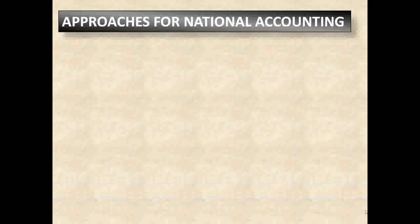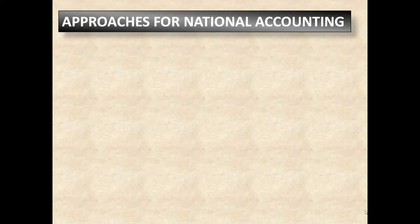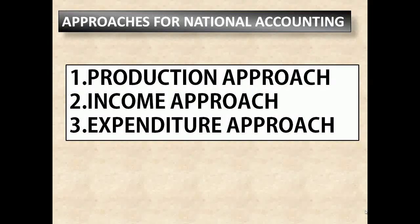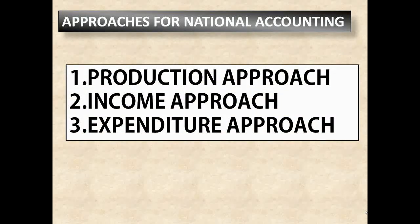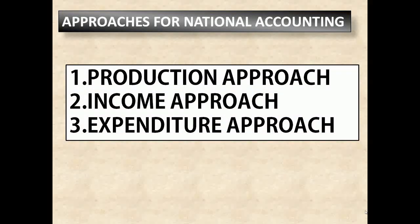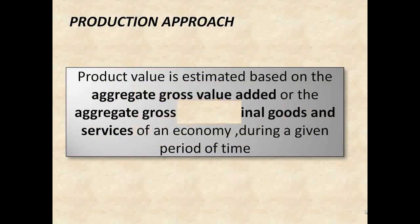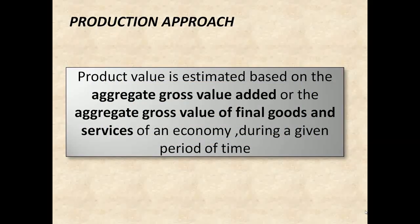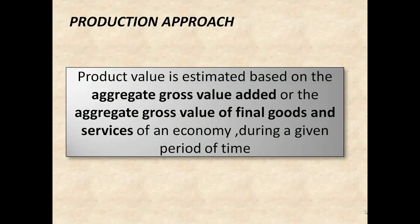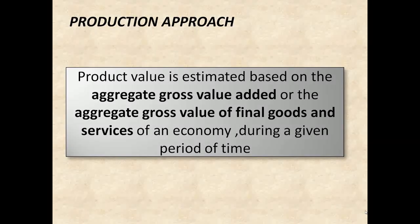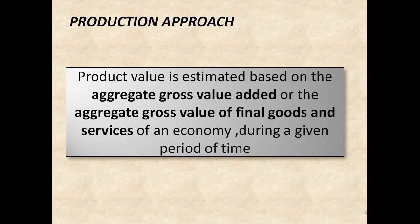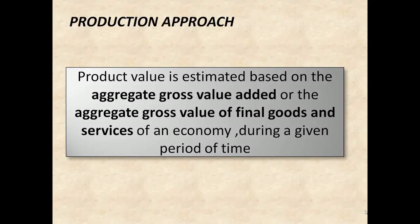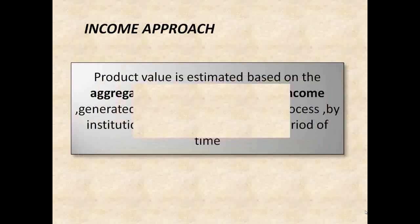Mainly, there are three main approaches for national accounting: the production approach, the income approach, and the expenditure approach. Under the production approach, the product value is estimated based on the aggregate gross value added, or the aggregate gross value of final goods and services of an economy during a given period of time.